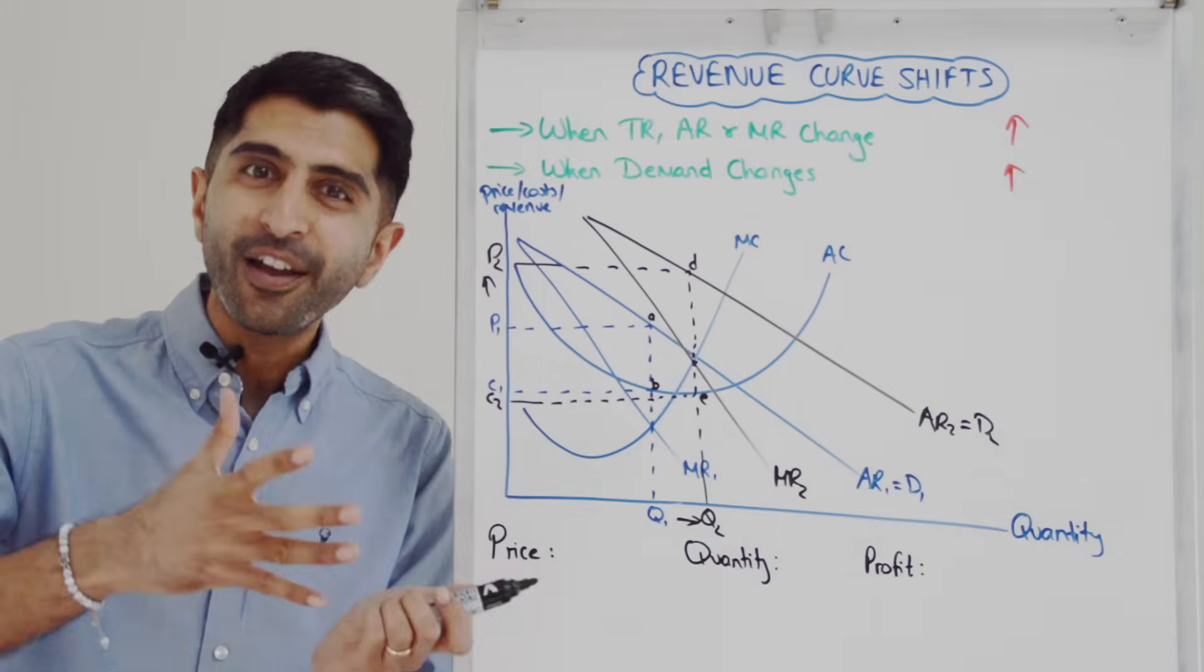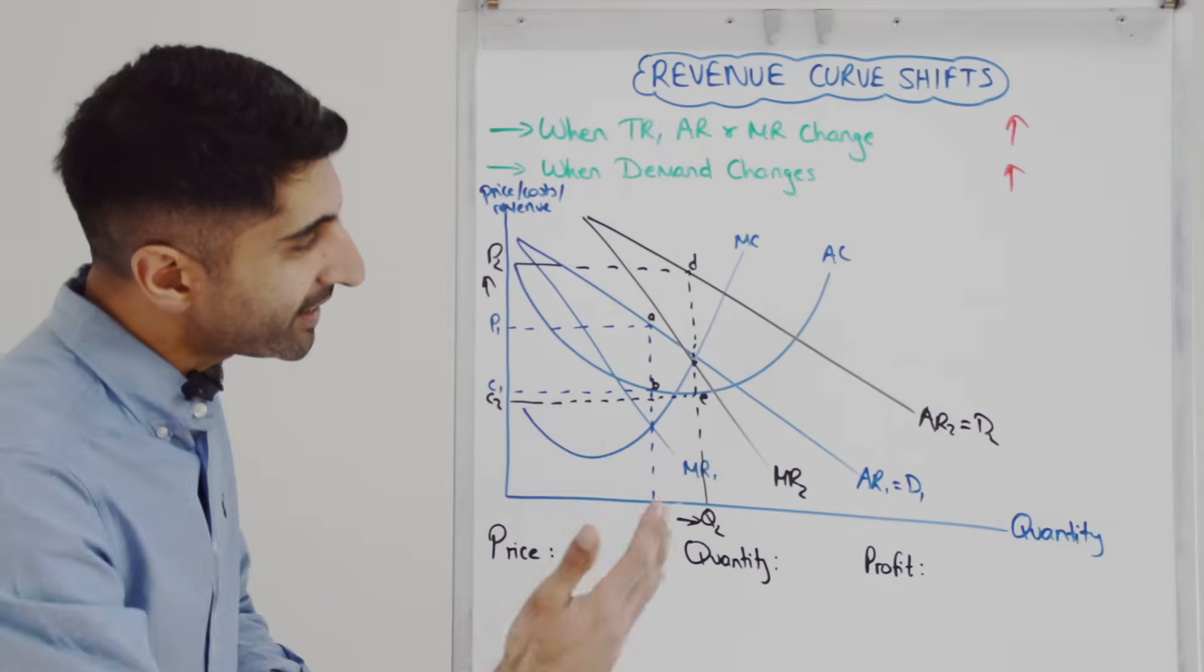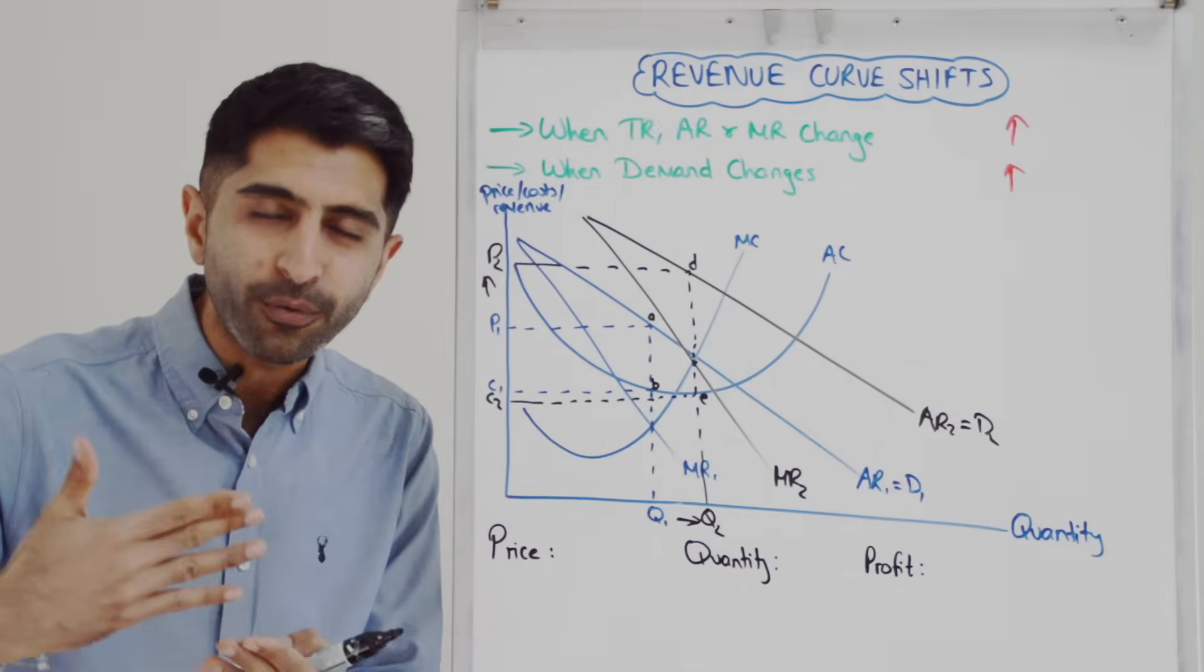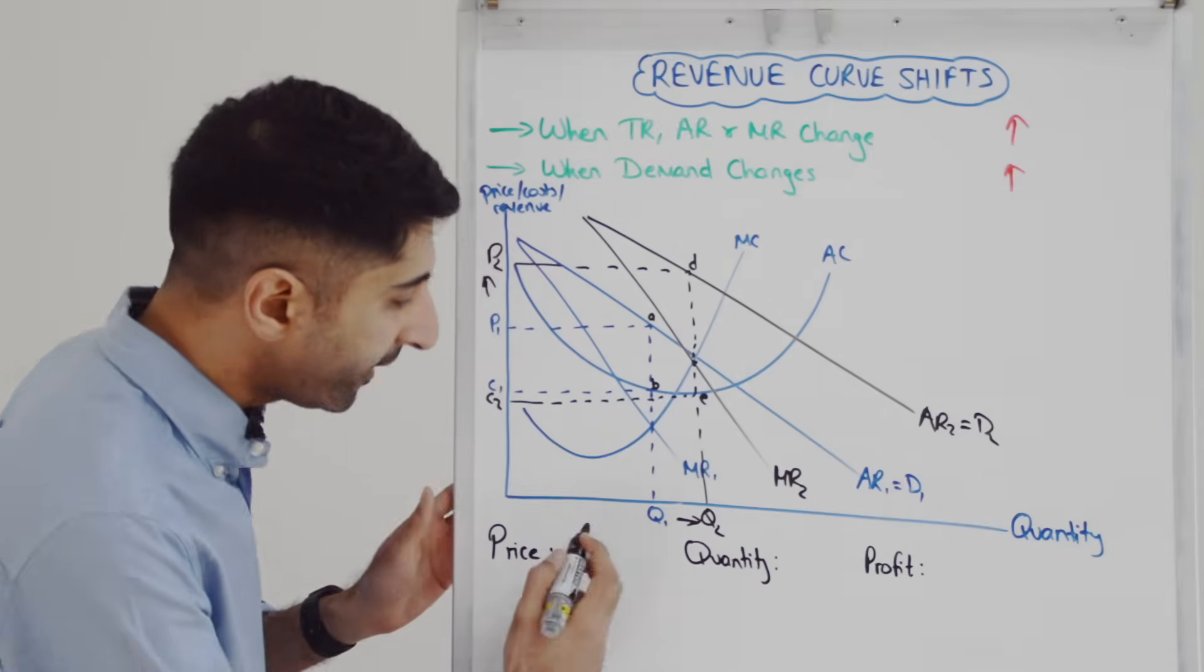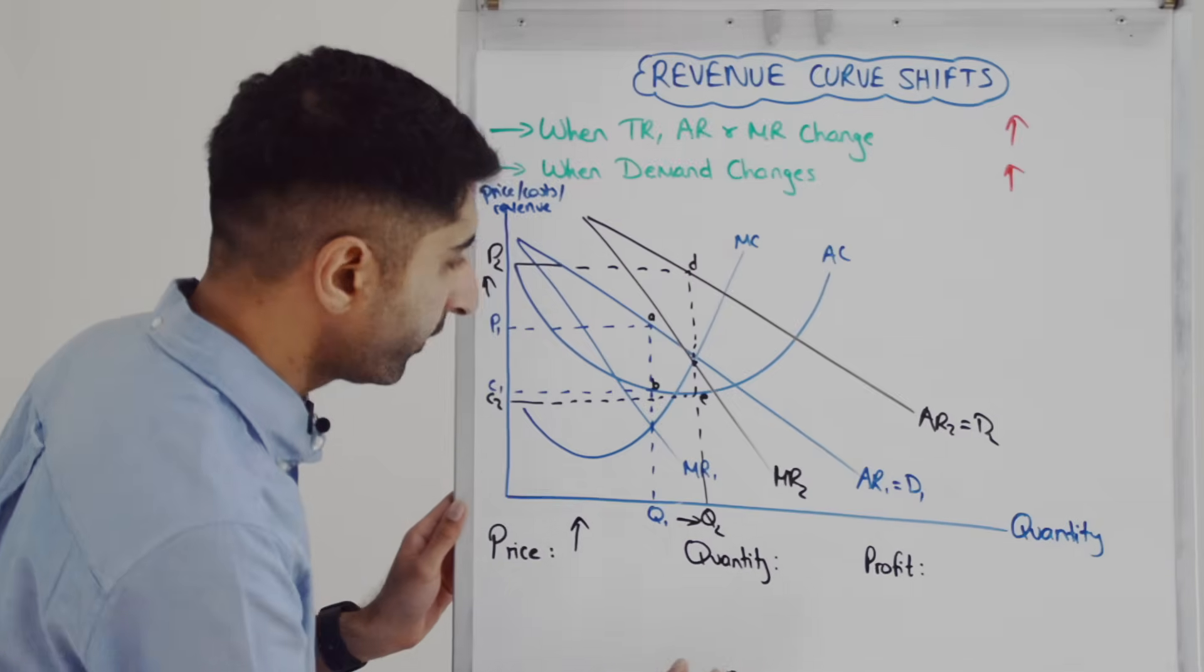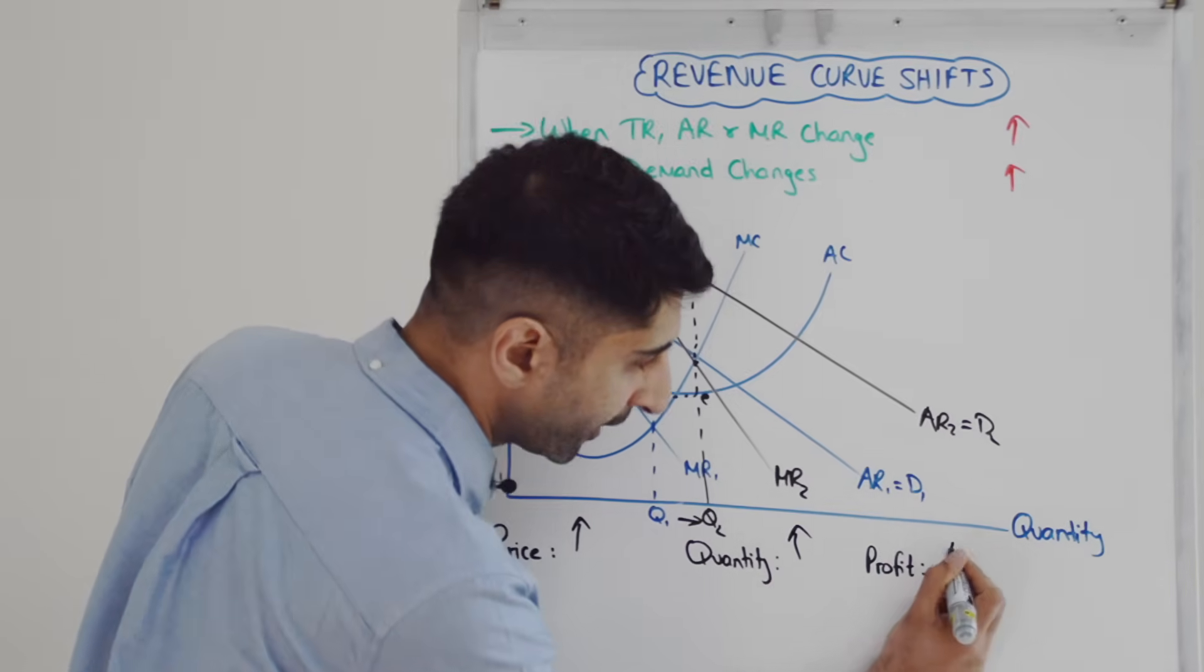It's a significantly higher box than it was before. So it's very clear to see that with an increase in demand, an increase in revenue, that price has increased, quantity has also increased, and profit has increased.